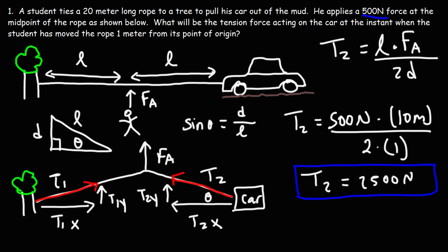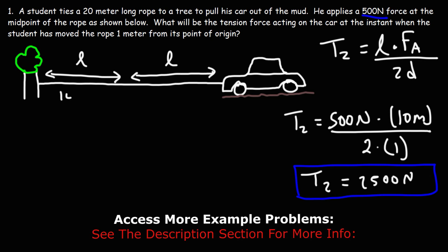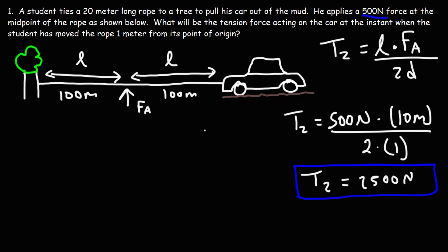To increase this effect, one of the best things you can do is increase the length of the rope — the longer the rope, the greater the magnification. Let's imagine the student used a 200-meter rope, so L would be 100 meters on each side. When he first applies the force, d is 0, and it progressively increases as he pulls the car out. Because d is in the denominator of the formula, as d increases, T2 — the tension force pulling the car — decreases progressively.